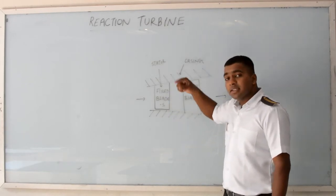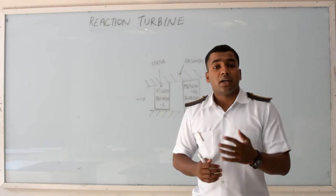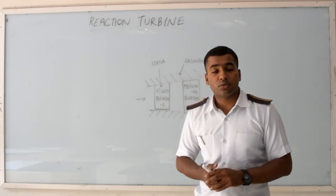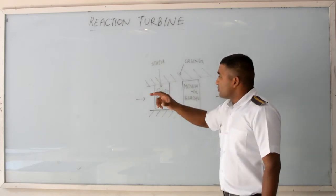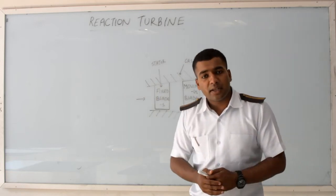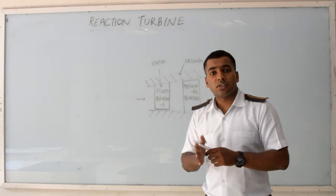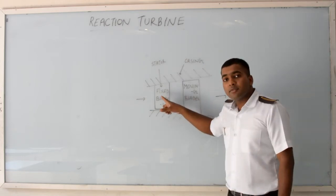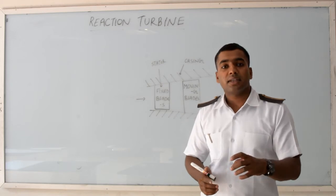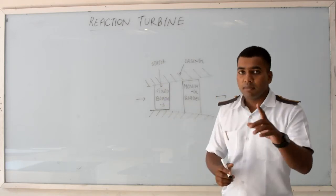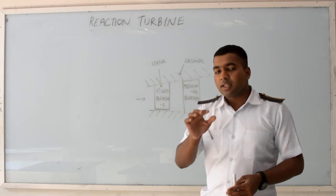The increase in velocity of the steam will impact on the moving blade. Now you must be thinking that these fixed blades are nozzles fitted on the Reaction Turbine, but that is not so. In a Reaction Turbine, conventional nozzles are not fitted. The passage provided for the stationary blades is designed such that they act as nozzles — the passage increases the velocity of the steam. That is why we say the stationary blades are acting as nozzles, but actually there are no nozzles fitted in a Reaction Turbine.